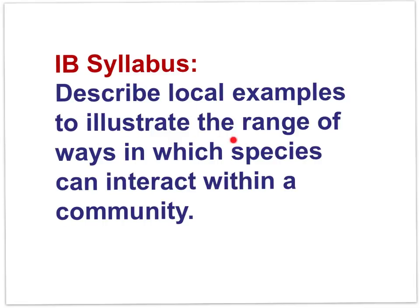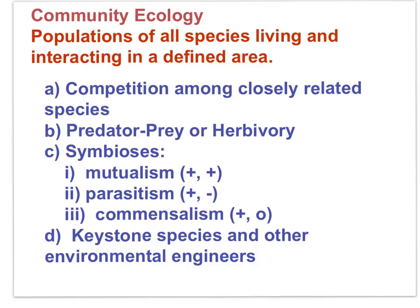Here is the outline of the range of ways in which species can interact within a community. Now we will look at symbioses. Mutualism is a plus-plus relationship where each species benefits. Parasitism and disease are plus-minus, where one species benefits and one is harmed. Commensalism is a plus-zero relationship where one species benefits but the other is neither helped nor harmed.